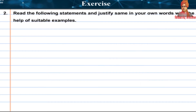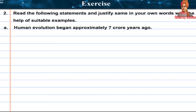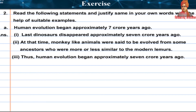Read the following statements and justify with suitable examples. Statement A: Human evolution began approximately 7 crore years ago. Answer: The last dinosaur disappeared approximately 7 crore years ago. At that time, monkey-like animals were said to have evolved from some ancestors who were more or less similar to modern lemurs. Thus, human evolution began approximately 7 crore years ago.